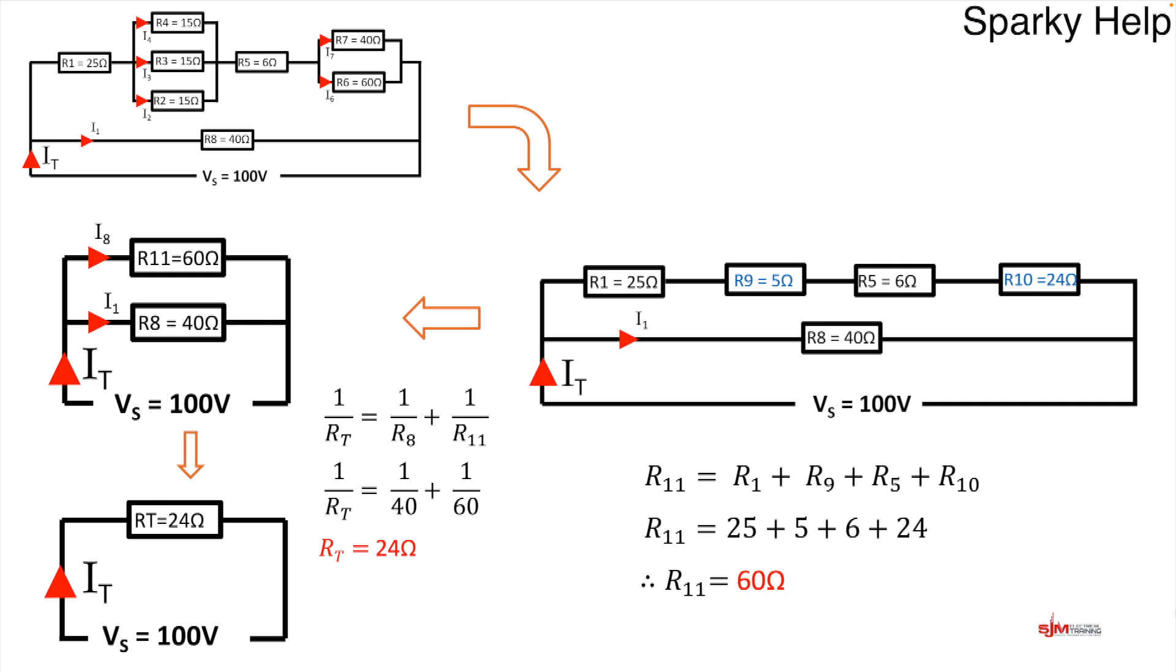So we can replace this again and redraw it as one resistor, 24 ohms. So we've gone from top to right to left to down. From eight resistors down to one. And in each case I've identified IT. And that can be calculated as such. The voltage supply over RT. So 100 over 24 gives us 4.16 amps recurring.